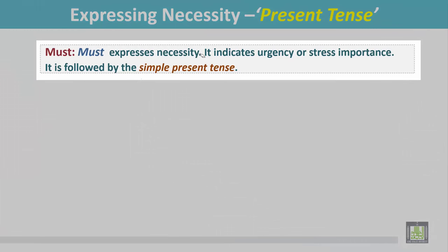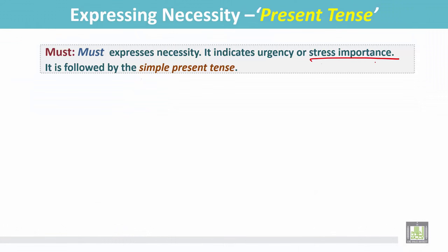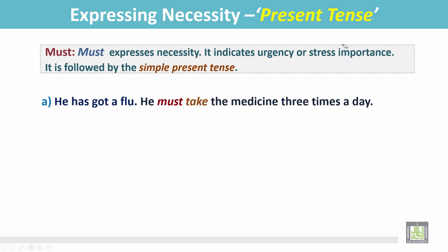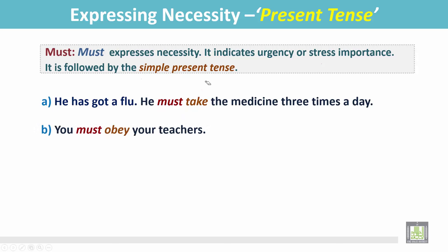Must expresses necessity. It indicates urgency or stresses importance, and is followed by the simple present tense. Example: He has got a flu — he must take the medicine three times a day. Must is followed by the simple present tense of the verb. Another example: You must obey your teachers. Here, must indicates importance.